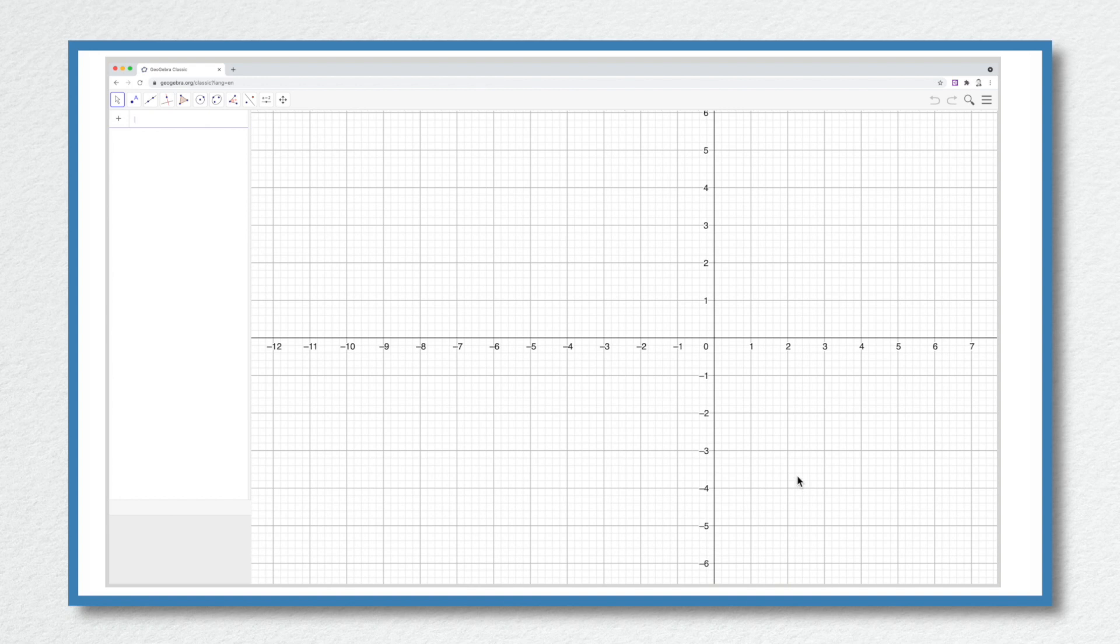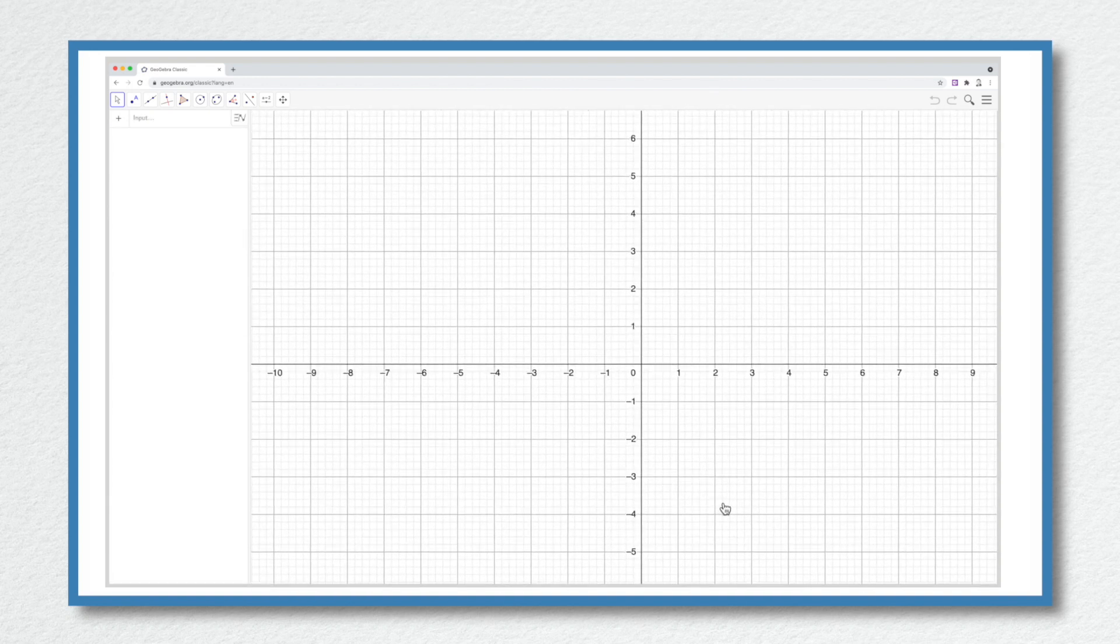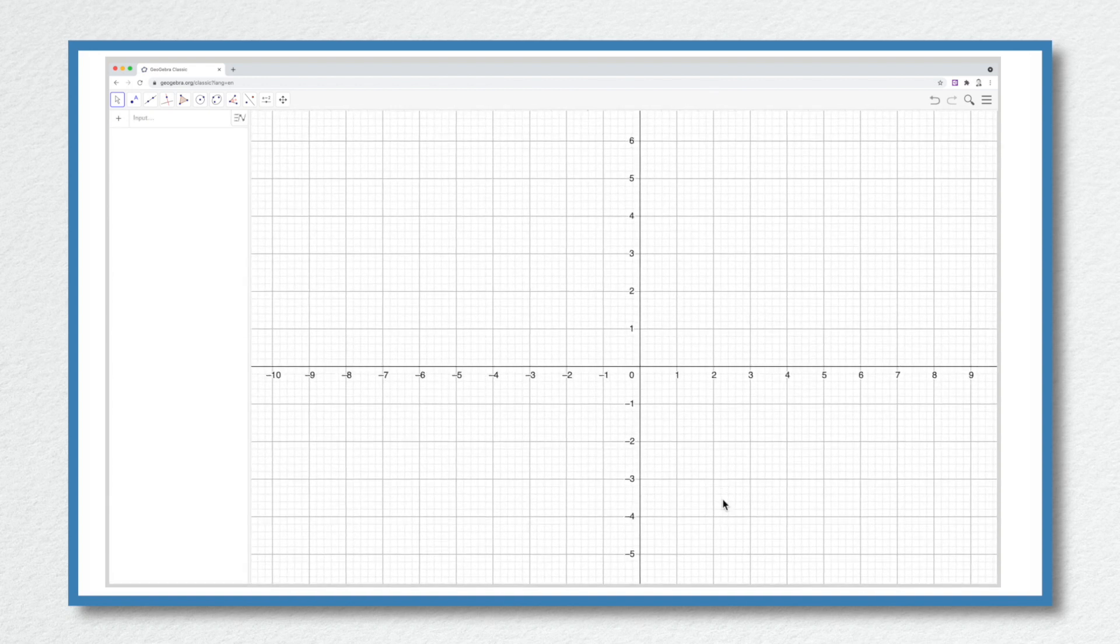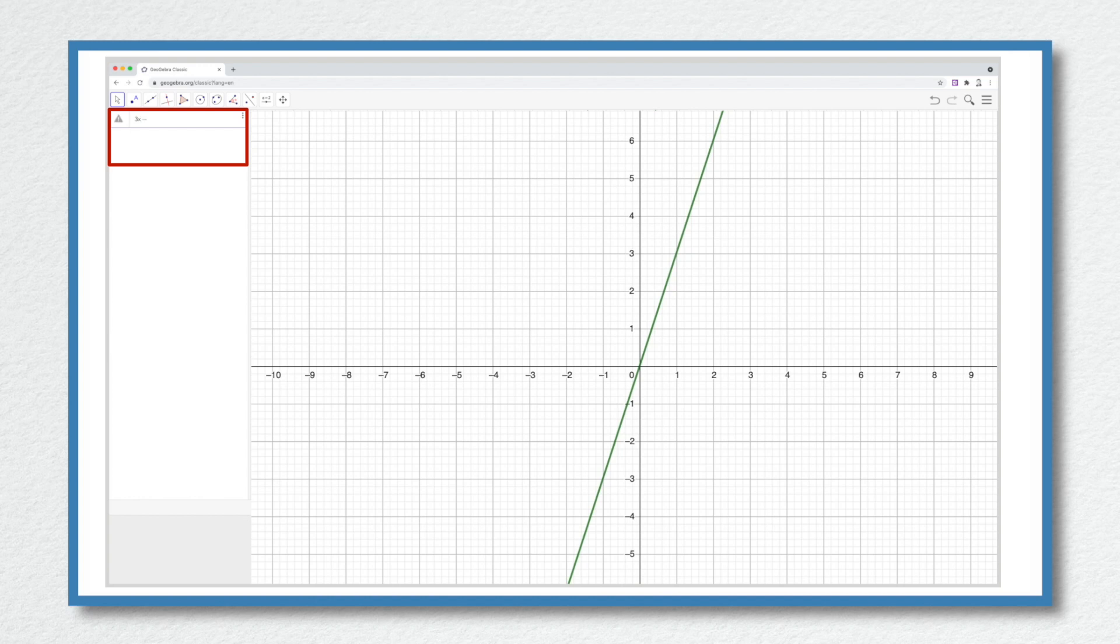If you type in GeoGebra.org/classic you should see a screen like this. I'm just going to center the axes by clicking and dragging using the mouse. At the top of the column on the left hand side of the screen I am going to input the first equation 3x subtract 5y is equal to 1, and then press the return key. The line is now displayed. It is a straight line.